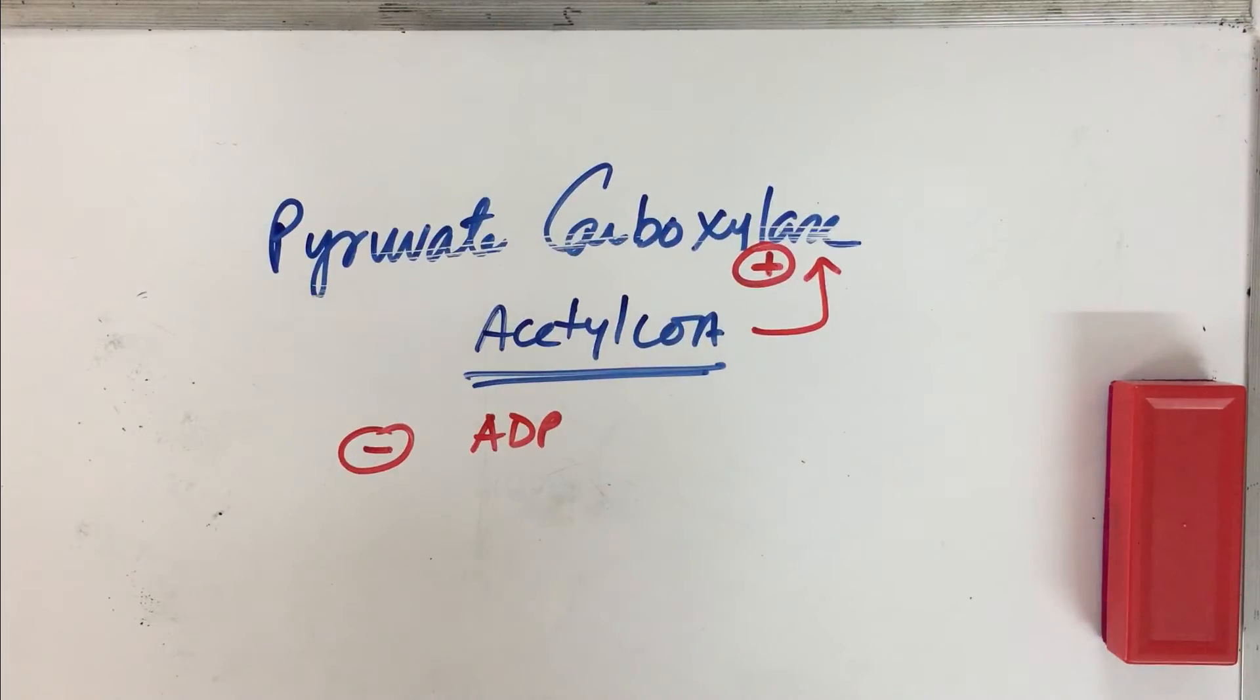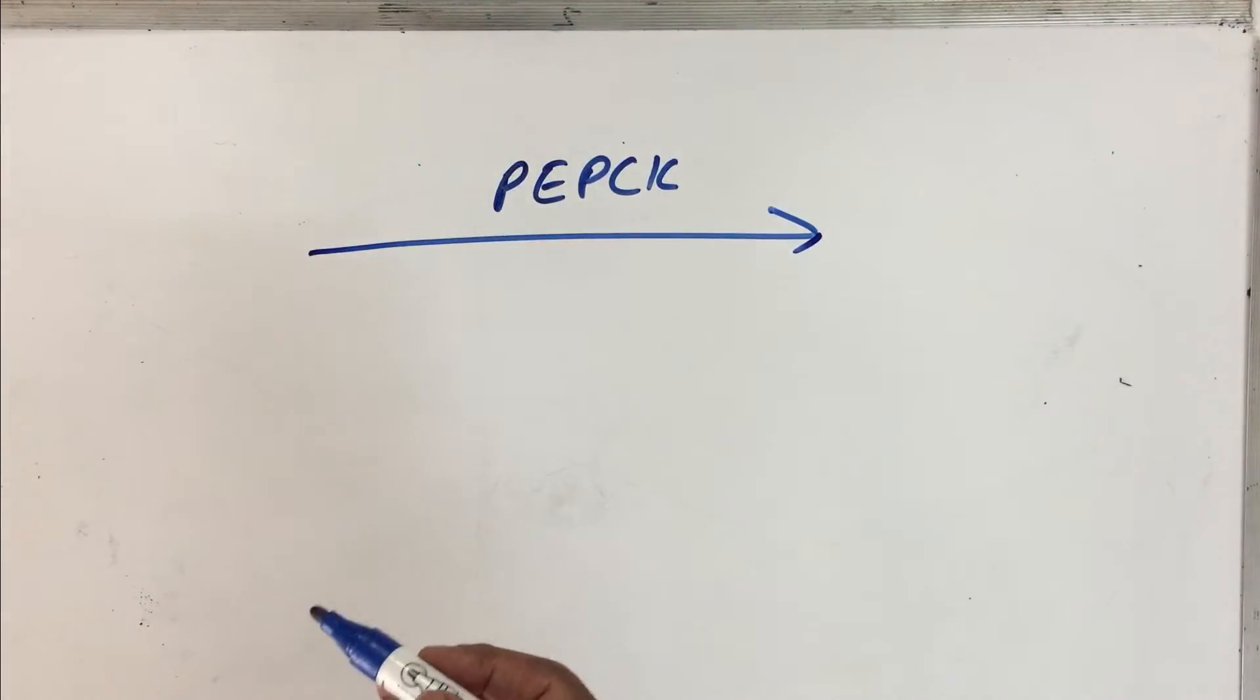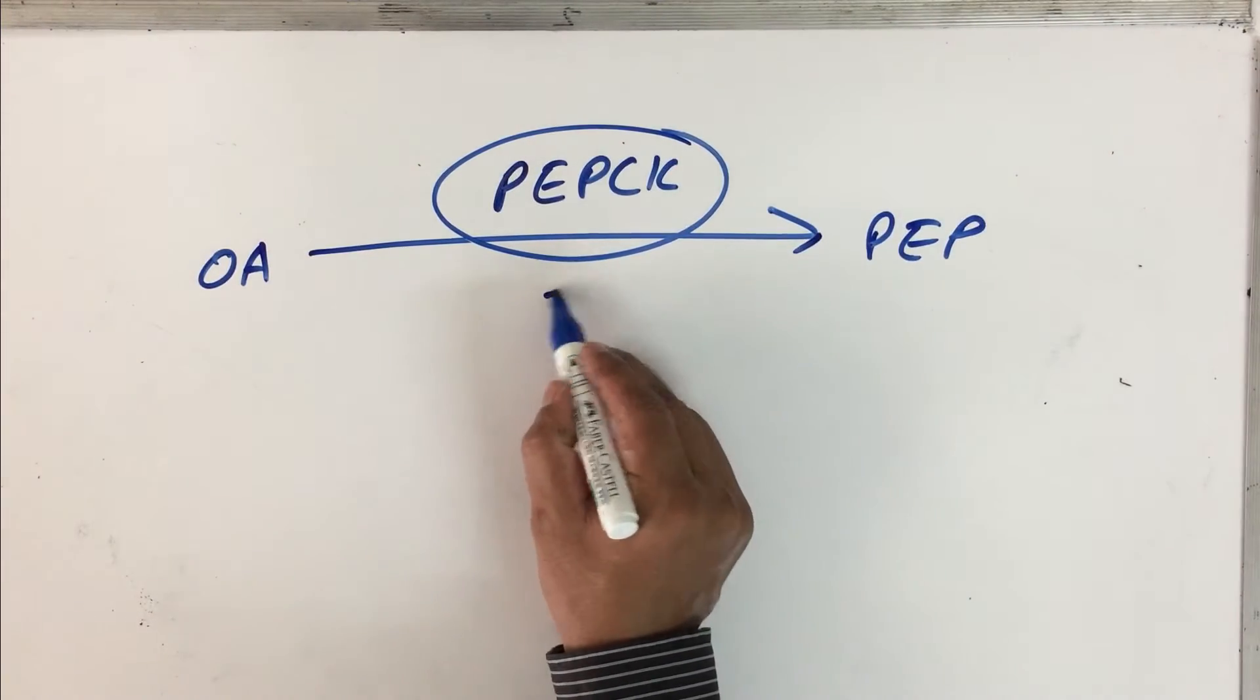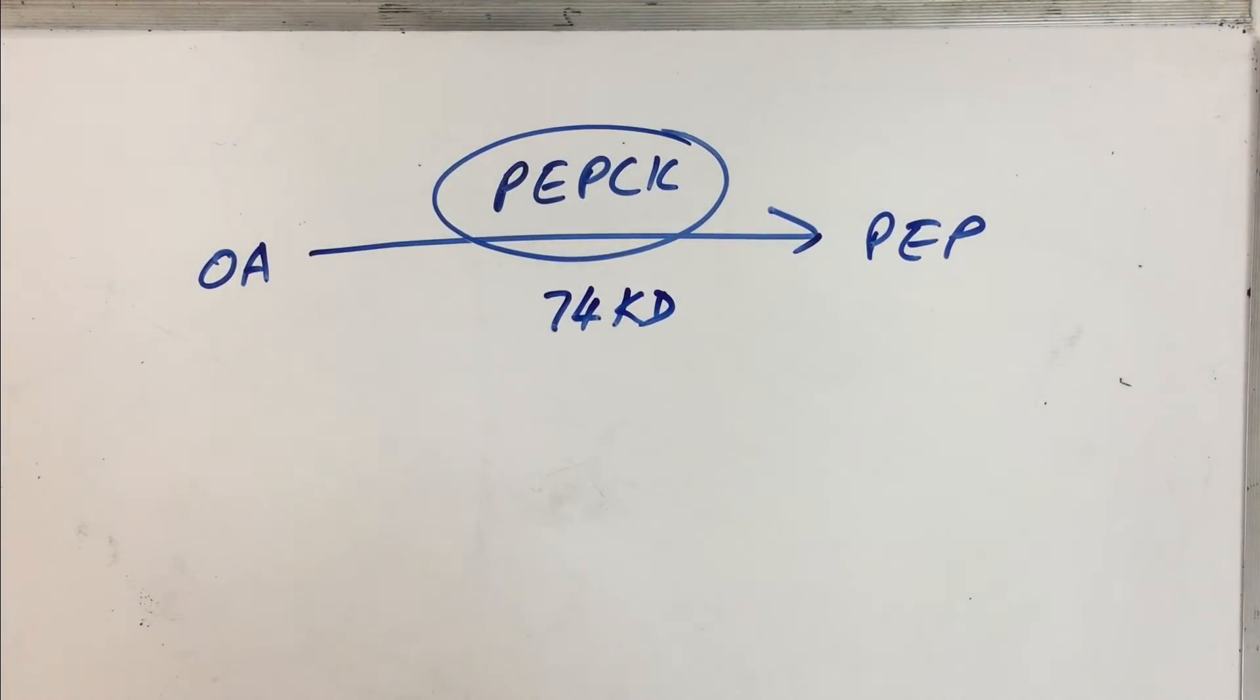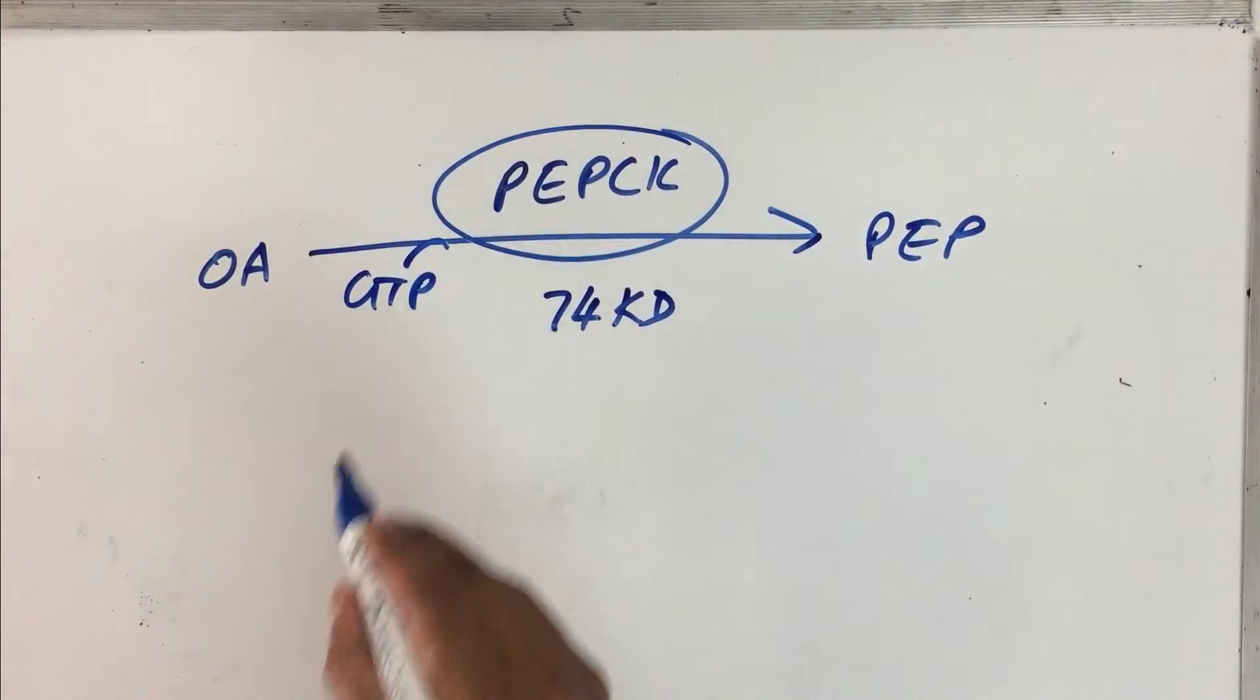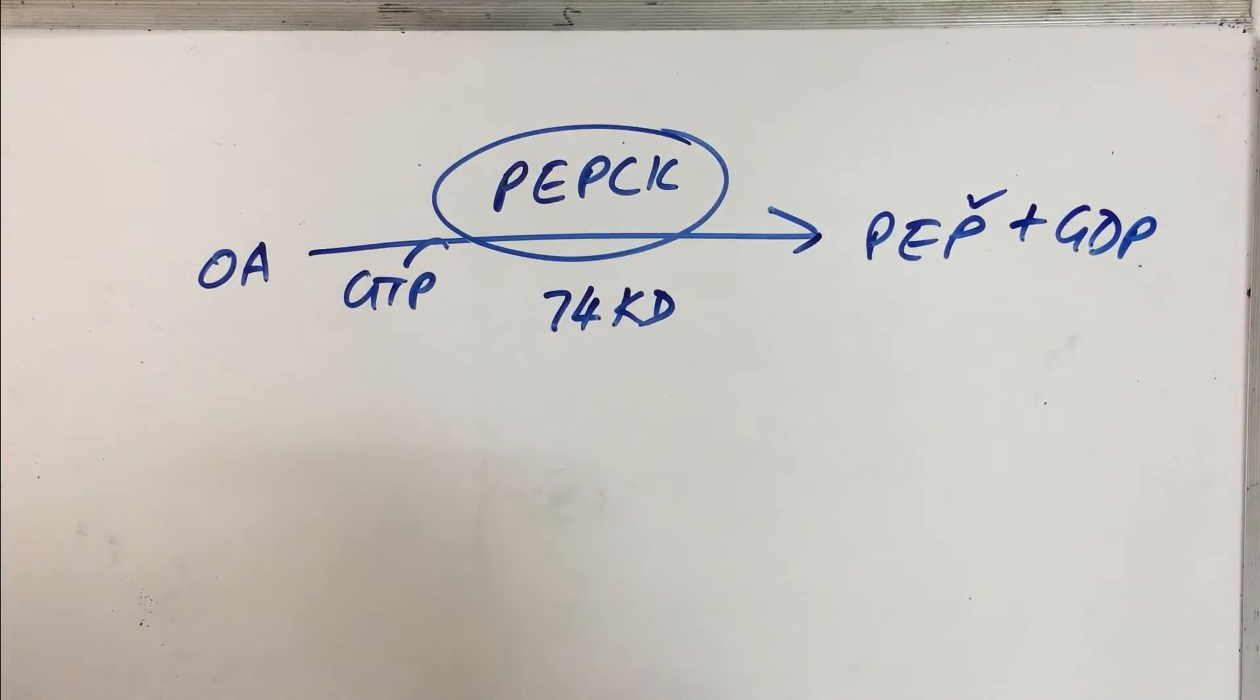The next enzyme we have in gluconeogenesis is PEP carboxykinase, that will be converting oxaloacetic acid into phosphoenolpyruvate. Now PEP carboxykinase enzyme is very interesting, because this enzyme is a monomeric enzyme with 74 kilodalton as the molecular weight. It is basically doing a conversion of oxaloacetic acid in a GTP driven conversion of oxaloacetic acid into PEP and GDP. We have seen this earlier also.